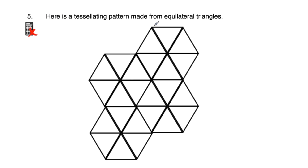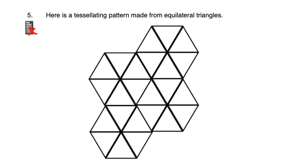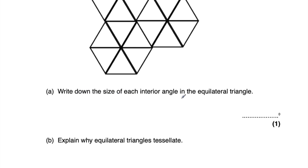Question number five says here's a tessellating pattern made from equilateral triangles. An equilateral triangle is a triangle where all the sides are the same length - for example four centimetres on each side. Each of the angles are equal: 60 degrees, 60 degrees, and 60 degrees, because 180 divided by three is 60. Part A asks us to write down the size of each interior angle in the equilateral triangle. The angles in a triangle add up to 180 degrees, and there are three equal angles, so 180 divided by three equals 60 degrees. So each interior angle is 60 degrees.